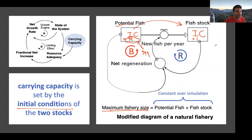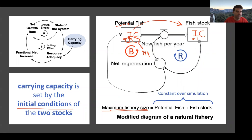We've taken carrying capacity — which used to be a separate parameter — and spread it across the initial conditions in these two compartments. If you remember the SIR model from the last lecture, this should make sense: it's like saying how many people are initially susceptible versus infected versus recovered, where the sum of all initial conditions is the total population. Here, the potential fish is how many initial spots I have in the fishery, the fish stock is how many are already taking up those spots, and together they sum to the total capacity.